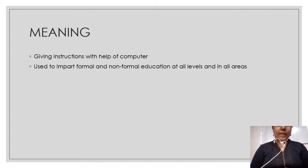Meaning of CAI: CAI means just giving instructions with the help of computer. If you are giving instructions with the help of a computer, then it will be computer assisted instruction. And this particular CAI is used to impart formal and non-formal education at all levels and in all areas.